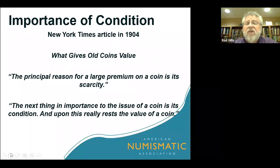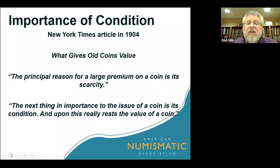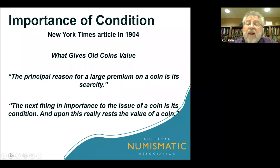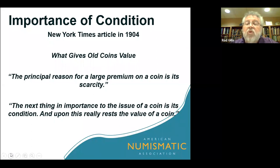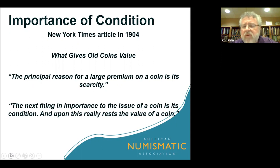In a New York Times article in 1904 called 'What Gives Old Coins Value?', they said the principal reason for a large premium on coins is its scarcity, and the next thing in importance is its condition — upon this really rests the value of a coin. When people ask me what determines the value of a coin, I tell them there are three variables: the vintage or rarity, the grade of the coin — generally the higher the grade, the more valuable — and the third is the demand for that particular coin. Some coins are always in high demand, some are rarely in demand — we call them sleepers — and then there are cyclical coins that go up and down in value.